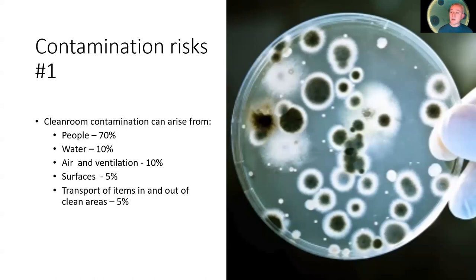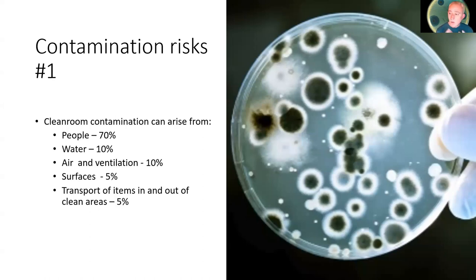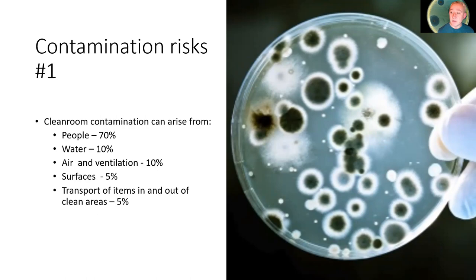According to industry surveys, people are the primary source of contamination within clean rooms, accounting for over two thirds of the contamination. We know this by the types of microorganisms detected through monitoring programs — those organisms in close association with the human skin microbiota, both resident and transient to human skin. This is often an abundance of gram-positive organisms, the Micrococcaceae and coryneforms in particular.